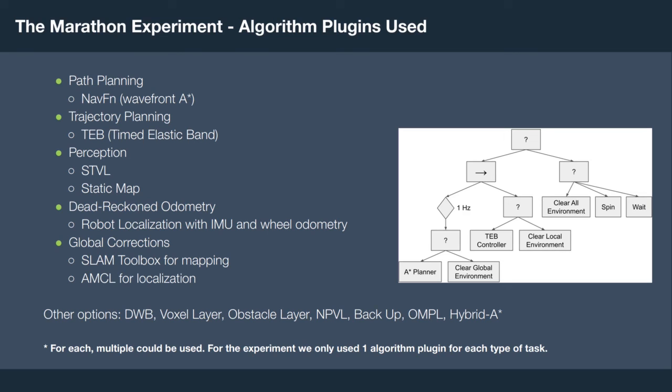Our behavior tree for these experiments shows that if the A-Star planner failed, we might clear the global environment. If our TEB controller failed, we'd clear the local environment. And if the navigation task itself failed, we would enter a recovery subtree that conducts all available recovery behaviors.